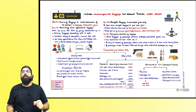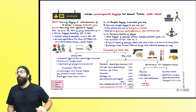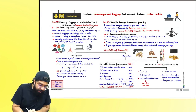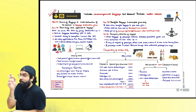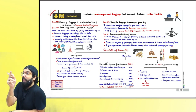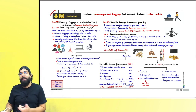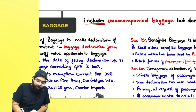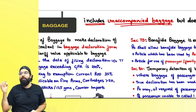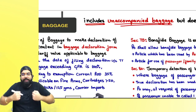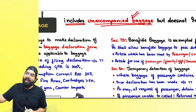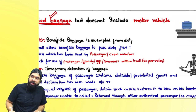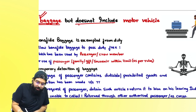Let's revise the chapter of baggage under customs. In customs, custom duty is levied on goods, and goods includes baggage also. Baggage includes unaccompanied baggage — so if you are coming from outside India, whatever baggage comes later is unaccompanied baggage. Baggage rules are applicable to unaccompanied baggage also, but it does not include motor vehicles.